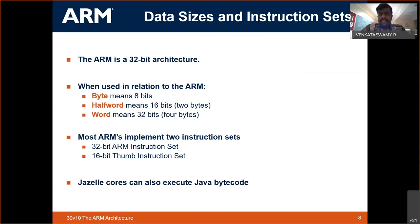What they introduced in ARM microcontrollers and microprocessors is something called the Thumb instruction set — this is an important term that may come up in interviews or aptitude tests. The 32-bit instruction was larger and took a lot of time, so they created a simplified 16-bit instruction set called the Thumb instruction set.